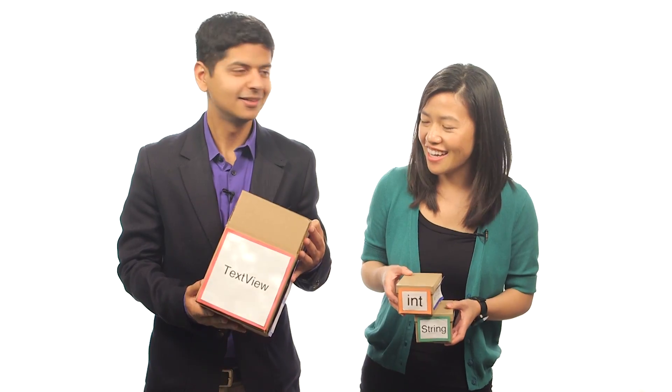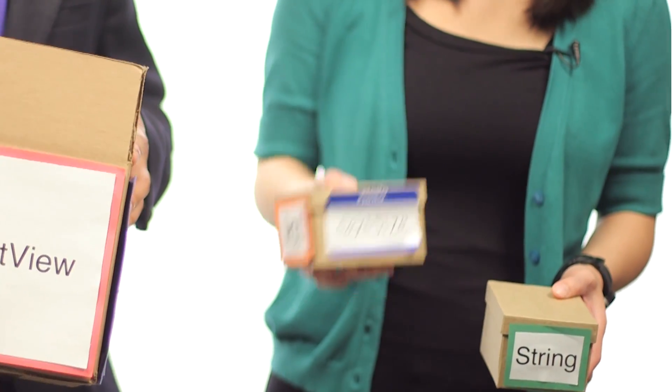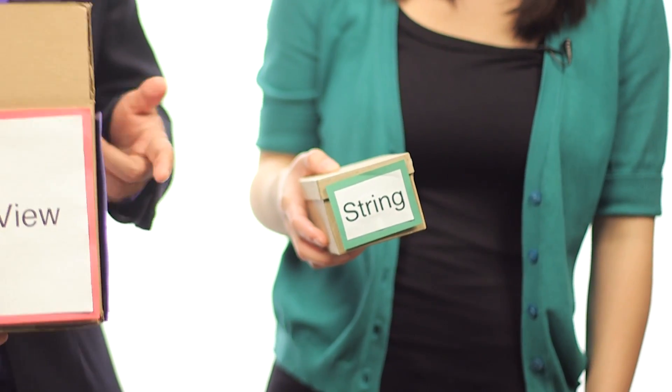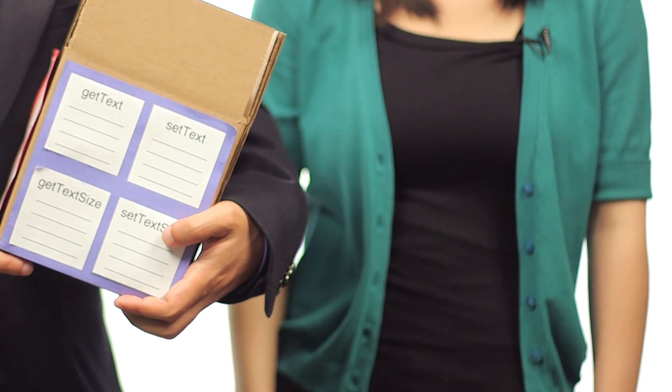Like a text view. So we can have an integer variable for the font size. And then you can also have a string variable for the actual text itself. Yeah, and those can go inside the text view as the state of the text view. And then we can interact with those things using different methods that we're going to play with next. Okay, let's do that.